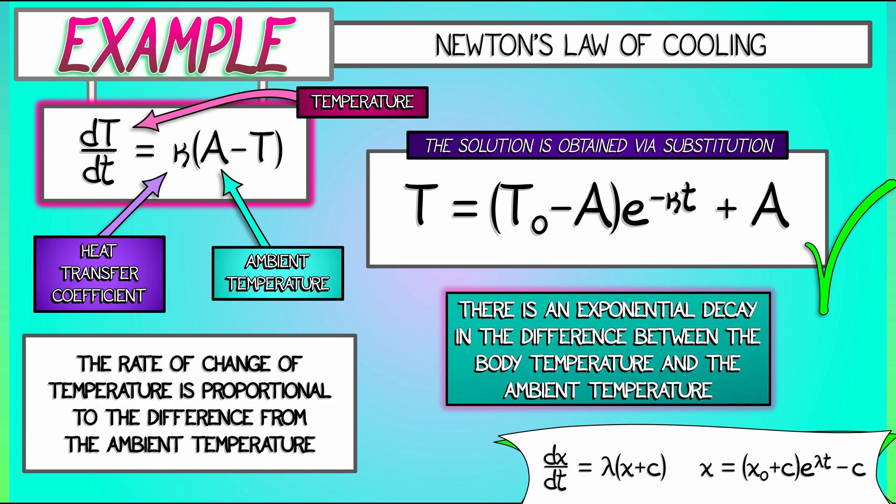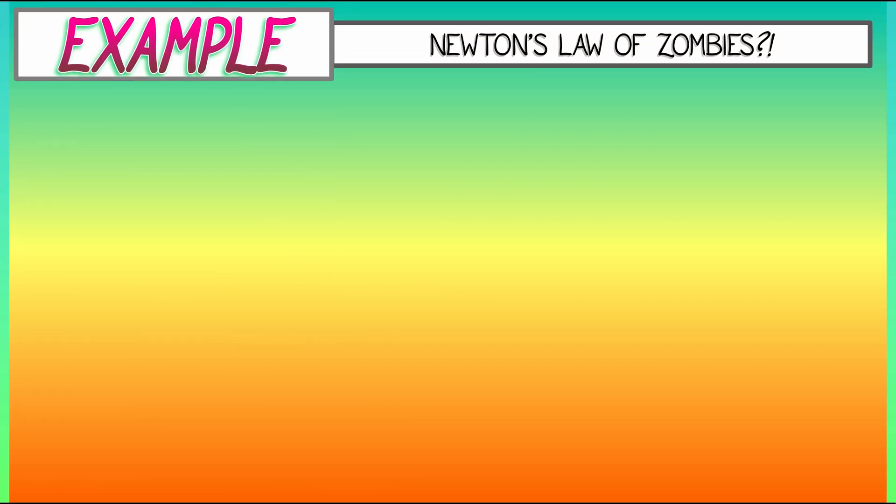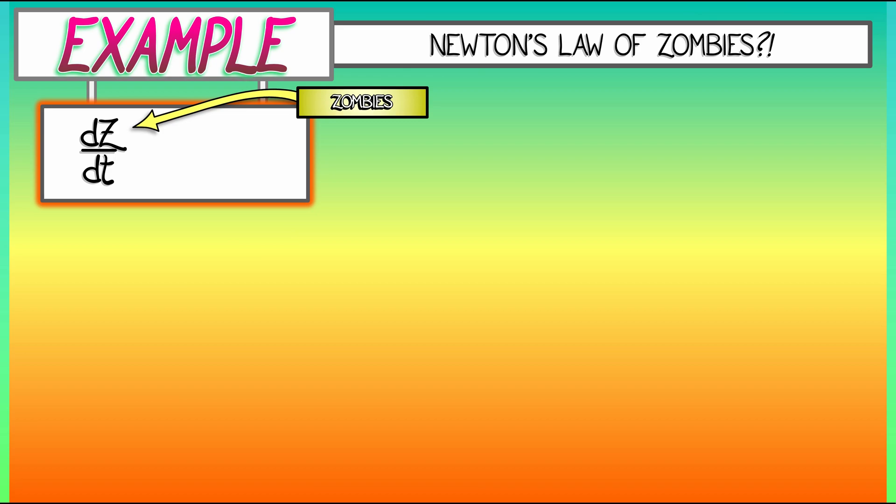But have you heard of Newton's law of zombies? That's right. It's zombie invasion time. Roar. And what we have is a population model where the rate of change of the number of zombies, dZ/dt, where Z is the amount of zombies in our population, is equal to R times quantity P minus Z, where R is a contagion coefficient.